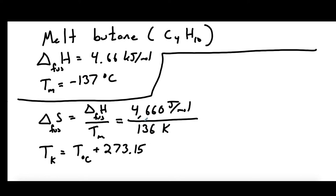So now we're going to divide and get our answer. And we get that it's a positive 34.3 joules per mole per Kelvin. So that tells us if we take one mole of butane and it's already at its melting point and all we do is melt it from solid to liquid, this is how much the entropy of that butane is going to change.